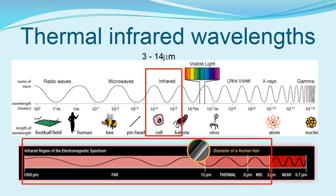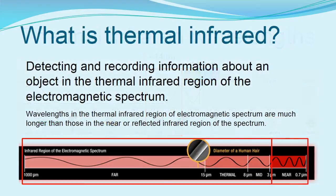Because objects vary in the way they store and emit energy, that allows us to differentiate between them. Because their thermal emission properties are predictable, we can also derive their temperatures. Thermal remote sensing can thus be simply defined as detecting and recording information about an object in the thermal infrared region of the electromagnetic spectrum. Note that the thermal wavelengths are much longer than those in the near or reflected region of the spectrum.